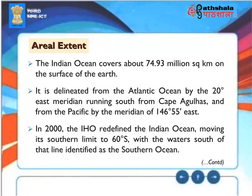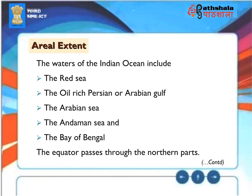Aerial Extent. The Indian Ocean covers about 74.93 million square kilometers. It is delineated from the Atlantic Ocean by the 20-degree east meridian, running south from Cape Agulhas, and from the Pacific by the meridian of 146 degrees 55 minutes east. In 2000, the IHO redefined the Indian Ocean, moving its southern limit to 60 degrees south, with waters south of that line identified as the Southern Ocean. The waters of the Indian Ocean include the Red Sea, the Persian or Arabian Gulf, the Arabian Sea, the Andaman Sea, and the Bay of Bengal. The equator passes through the northern parts.